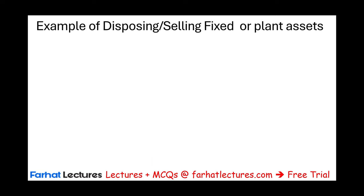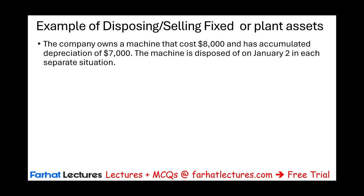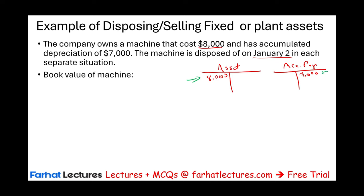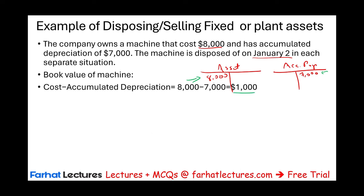Let's look at an example of disposing or selling plant assets. A company has a machine with a cost of $8,000 — meaning the machine has a debit balance of $8,000 — and accumulated depreciation of $7,000. The machine is disposed of on January 2nd, and we assume depreciation is up to date. So we compute the book value: $8,000 minus $7,000 equals $1,000.